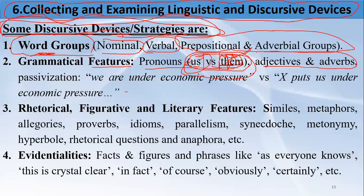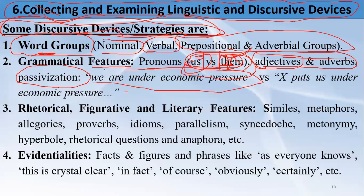You must focus on pronouns such as 'us' and 'them', and also on adjectives and adverbs — how the author describes in-group and out-group members. Nominalization is one of the most important linguistic strategies; the use of passive voice tells us about the narrative and the entire ideology of the discourse producer and their in-group members. For example, if people say 'we are under economic pressure,' it is a general sentence that does not deliberately put blame on anyone.